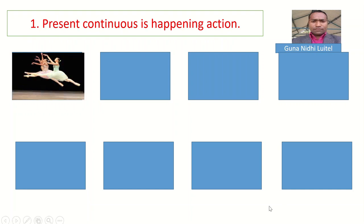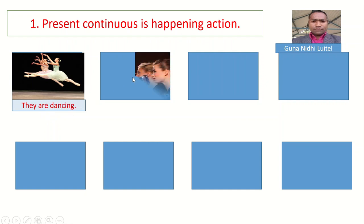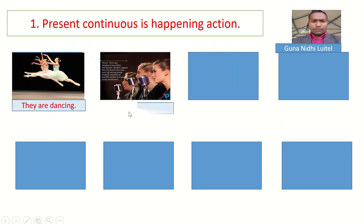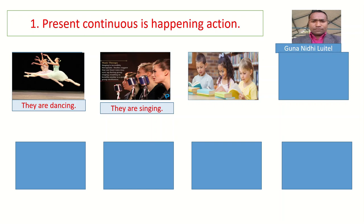Okay students, now we are going to learn the rules of present continuous tense. First rule: present continuous tense is a happening action. So what is happening in the first picture? They are dancing. So this is present continuous tense. The second picture — what is happening? They are singing. In the third picture, what is happening? They are reading.